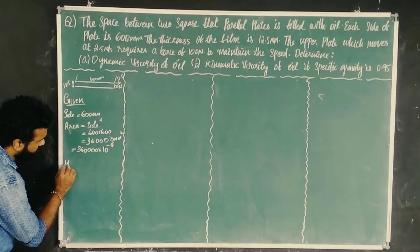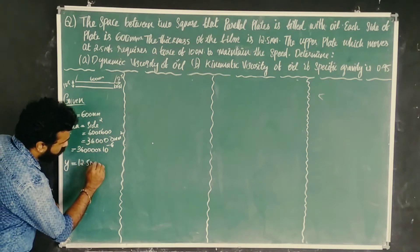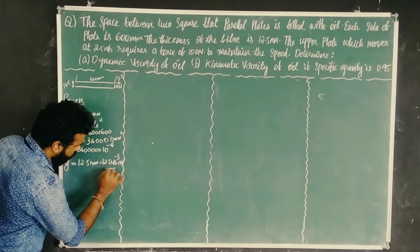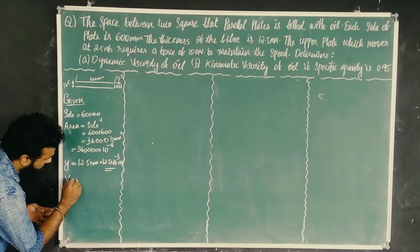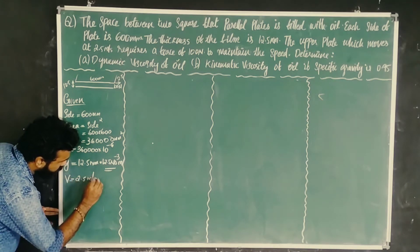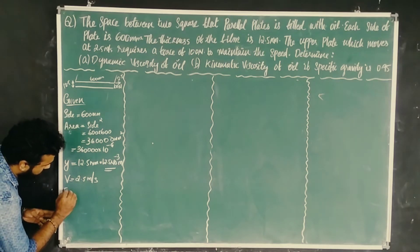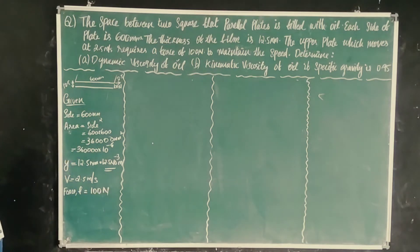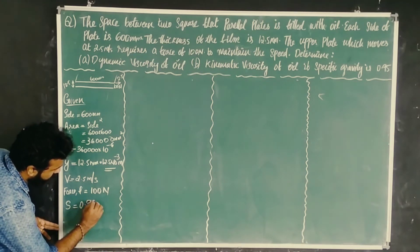The thickness of the film is 12.5 mm, which equals 12.5 × 10⁻³ m. The upper plate velocity is 2.5 m/s. Force equals 100 N. Specific gravity S equals 0.95.